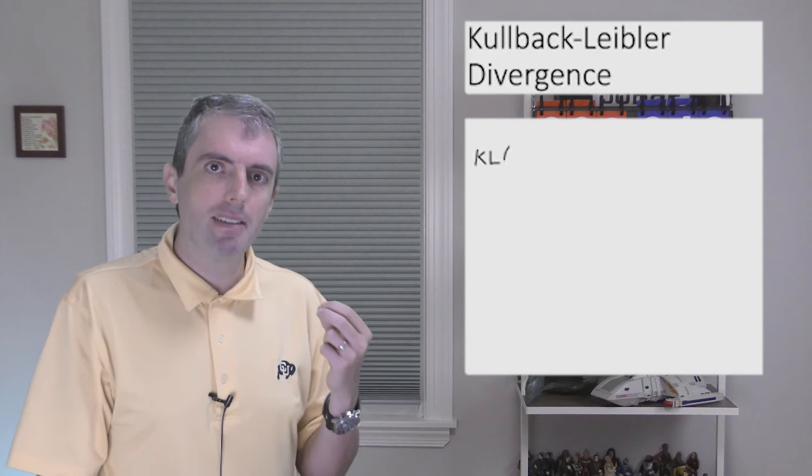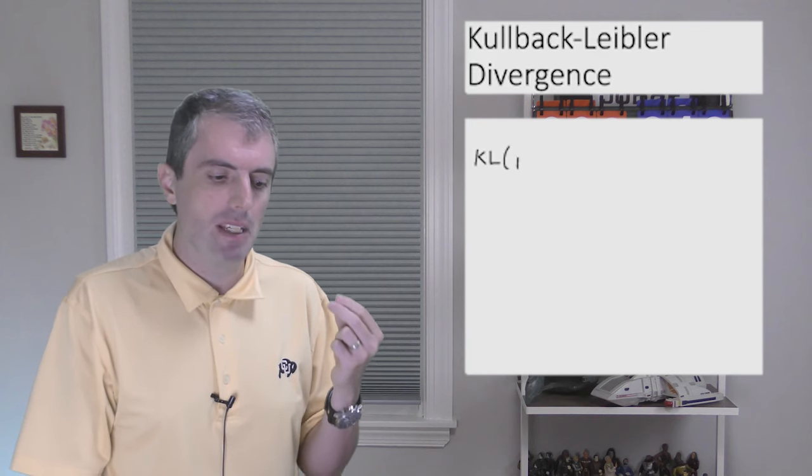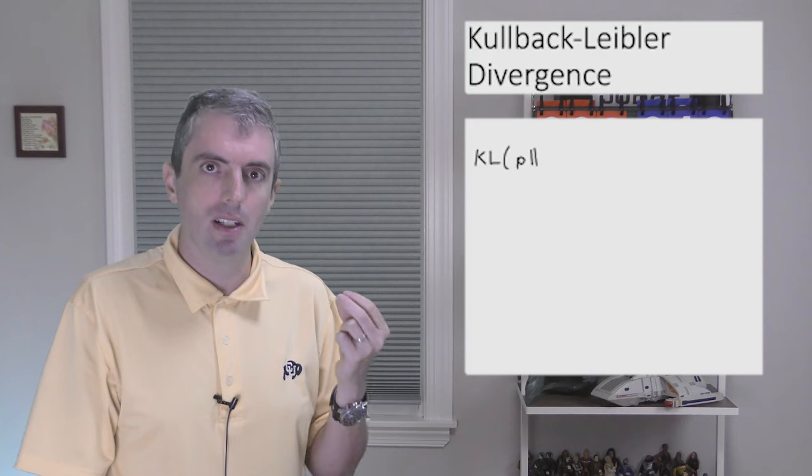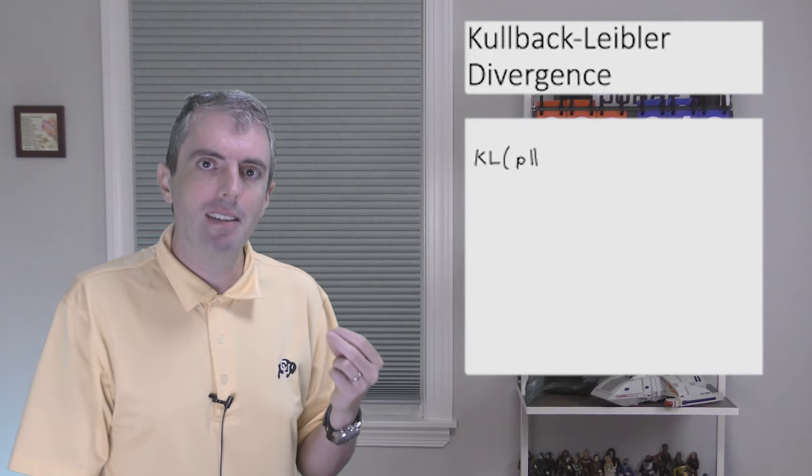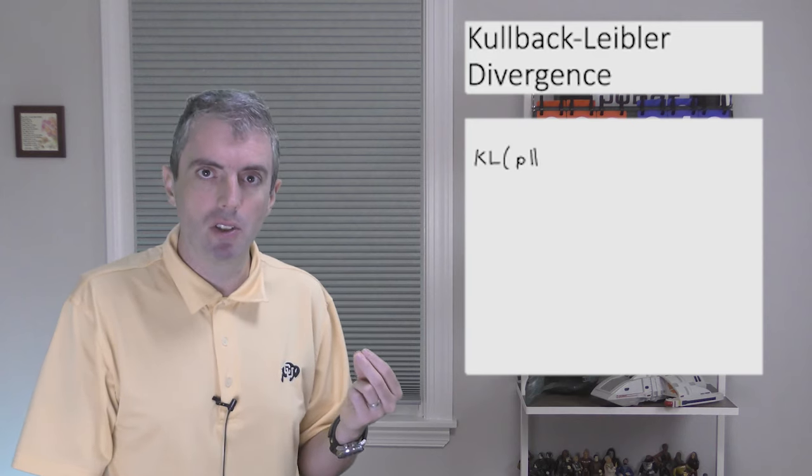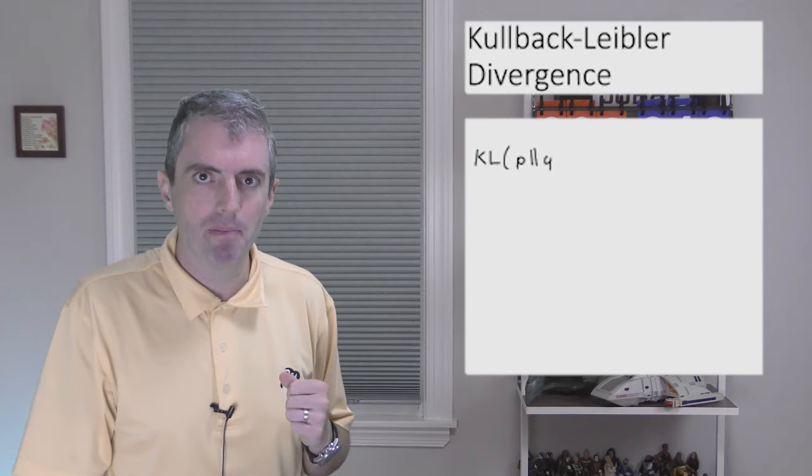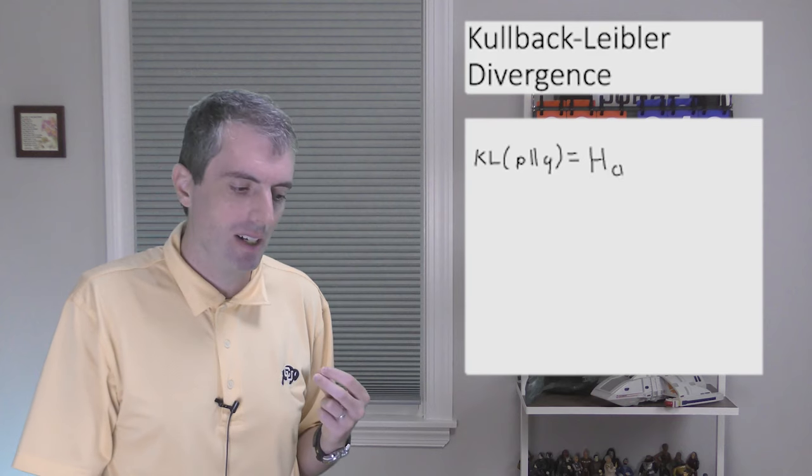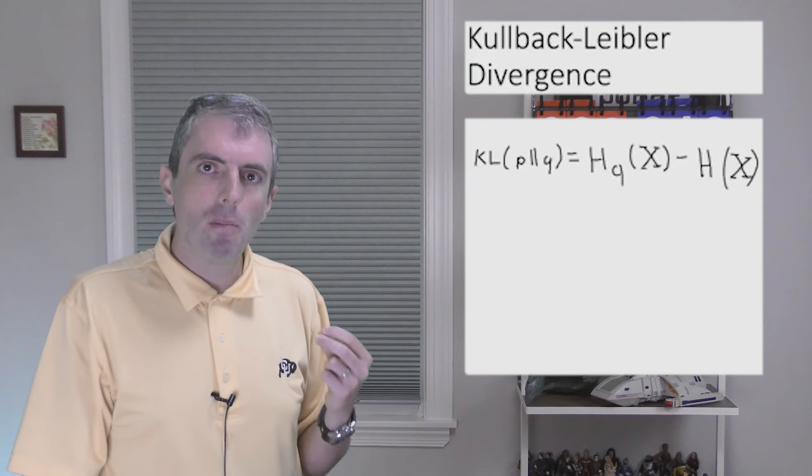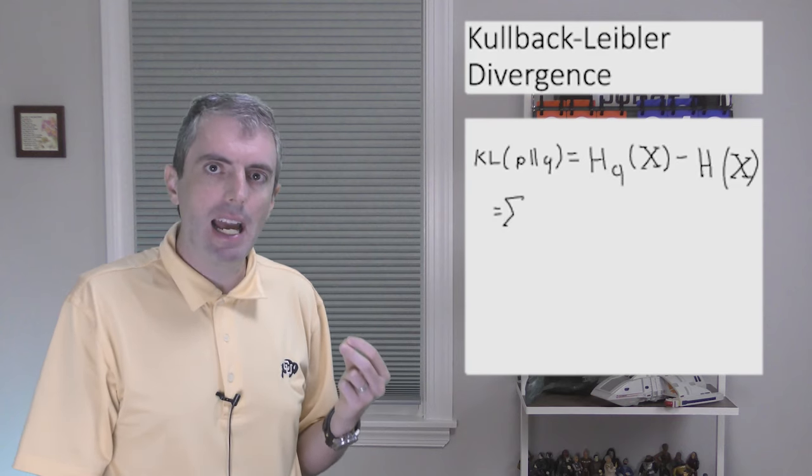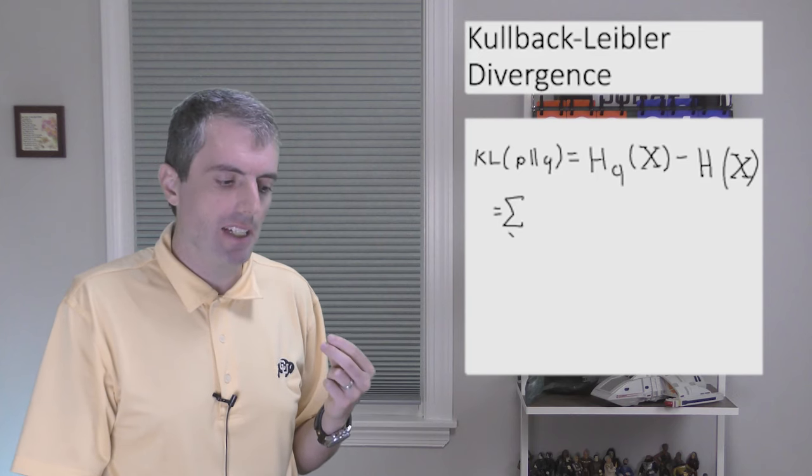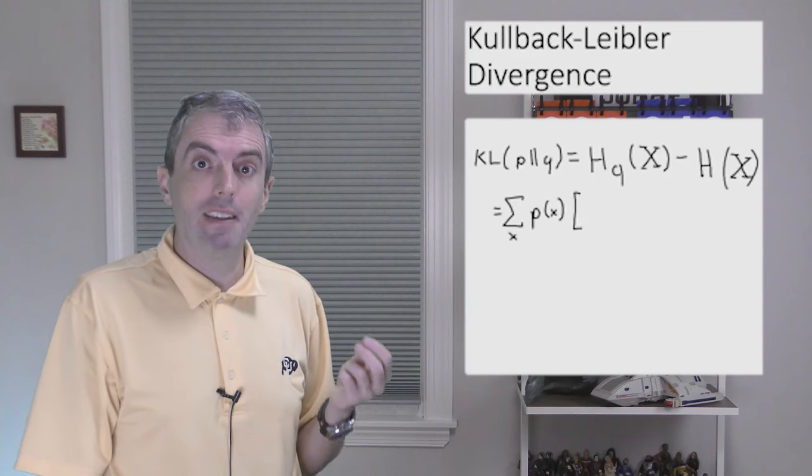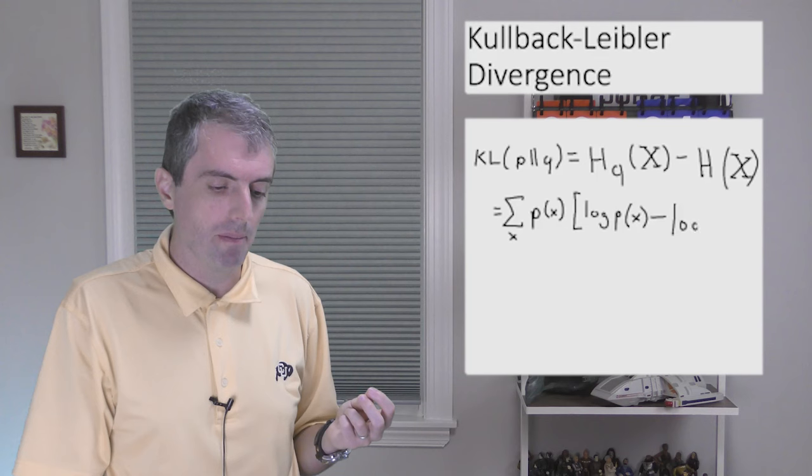This is just the cross entropy minus the entropy of the original distribution. So we write this as an operator on two distributions with a double line between them. Then you subtract the entropy from the cross entropy. When you write out the full math, you can factor out the probability of an observation, and then simplify the log to become a ratio.